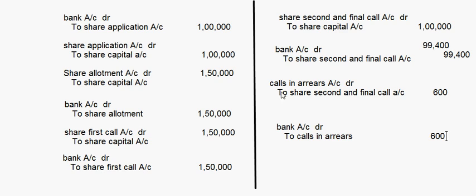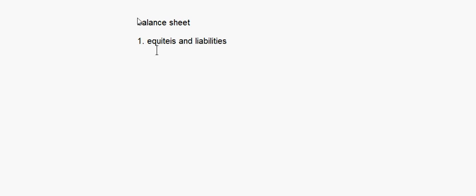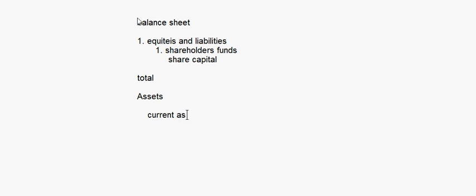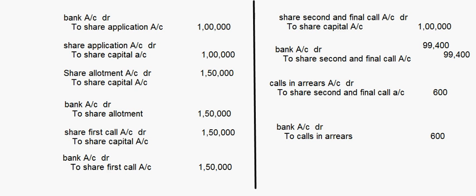Now in the balance sheet, the first section is equities and liabilities, under which you will have shareholders' funds, and below that, share capital. Under assets, you will have current assets, and under current assets, cash and cash equivalents. Now that 600 rupees — if the balance sheet is prepared before the cash is received, meaning the calls in arrears entry is there but the receipt entry is not.